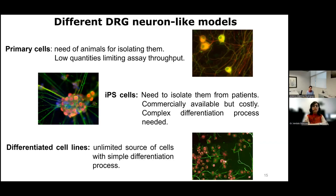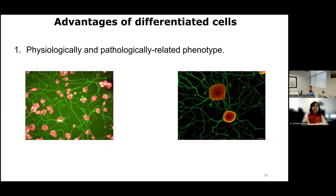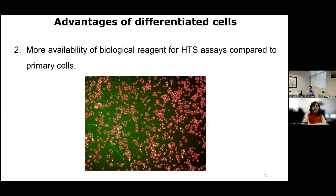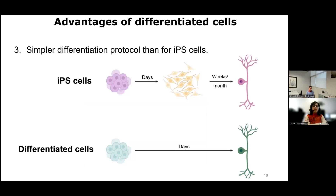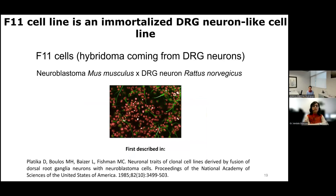In our case, the phenotypic features of dorsal root ganglia sensory neurons. Their advantages are the closeness of their phenotype to the physiological and pathological situation, the high availability of biological material for high-throughput screening assays compared to primary cells, and the simplicity of their differentiation protocol compared to IPS. We chose F11 cells for our model as an immortalized dorsal root ganglia neuron. F11 cells are hybrid cells obtained from mouse neuroblastoma cells and rat dorsal root ganglia neurons, and they are commercially available.